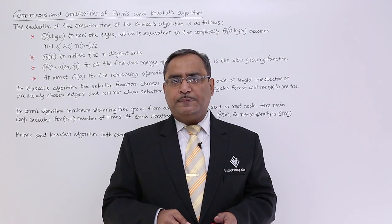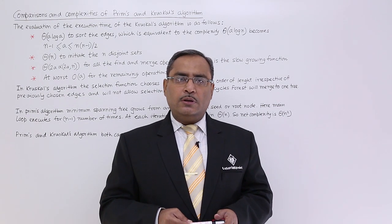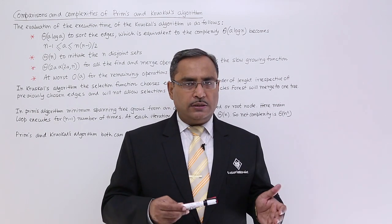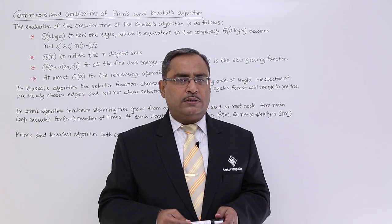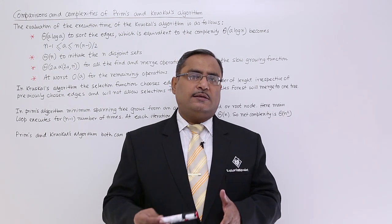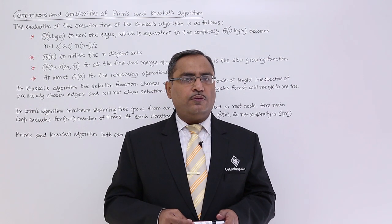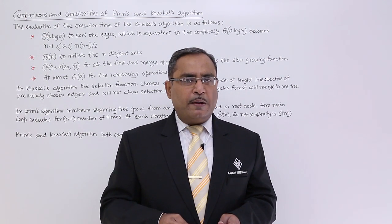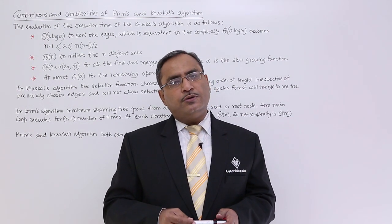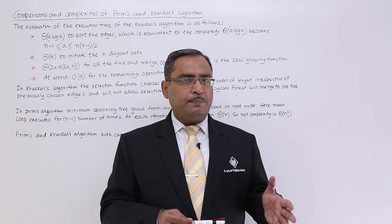Let us go for a comparative study between Prim's and Kruskal's algorithm. We shall do the analysis and suggest for what sort of graphs, what kind of graphs, Prim's and Kruskal's algorithm will be applicable. We know that both will find out the minimum spanning tree from a given graph. Please watch our previous videos where we have explained these algorithms with proper examples.